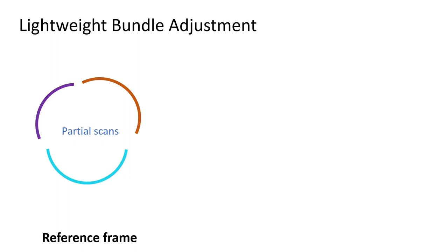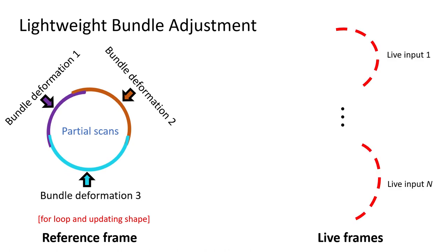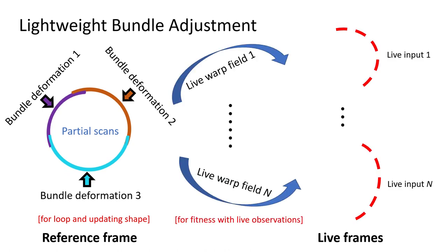After PIFusion, we can obtain several partial scans in the reference frame. In the reference frame, the partial scans should be deformed to construct a loop. Moreover, they should be warped to fit with outer observations in live frames.